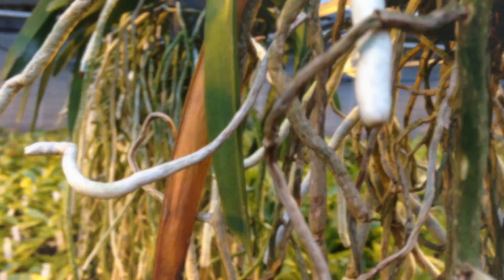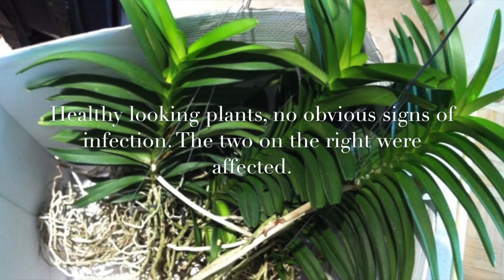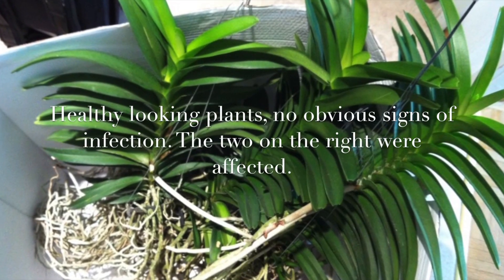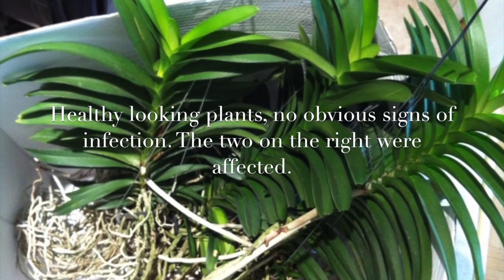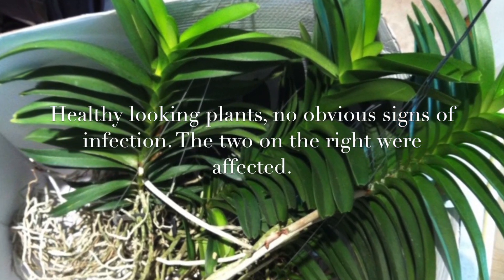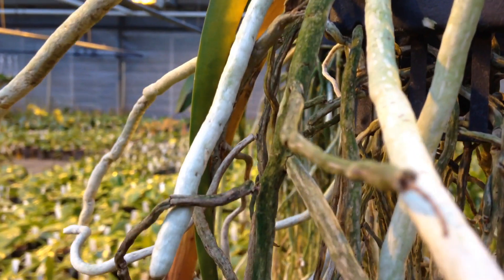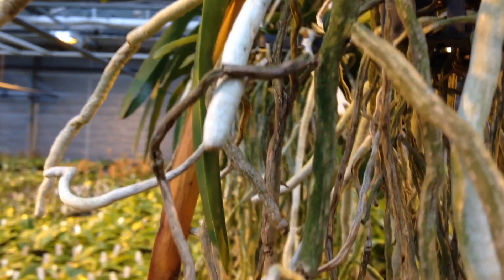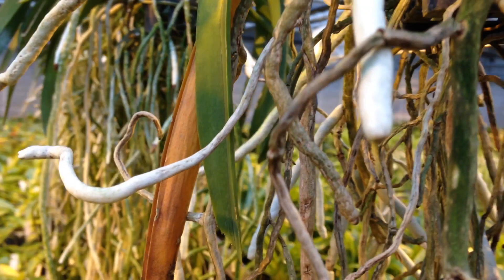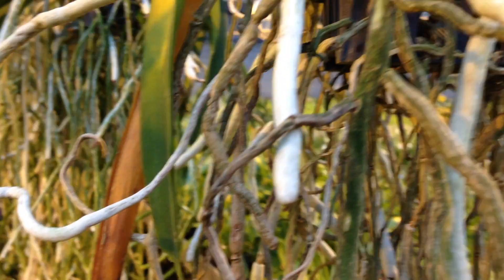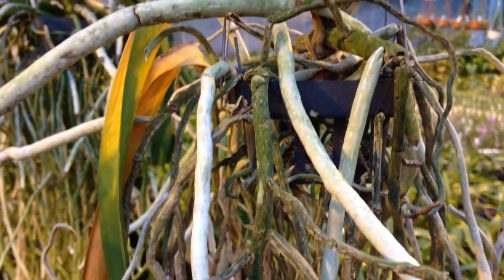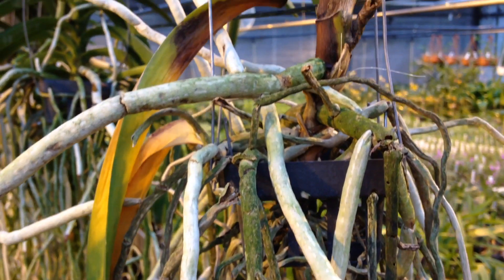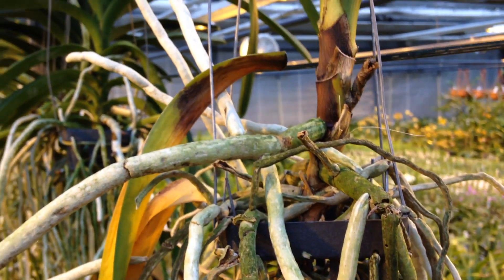About five years ago a vendor had just gotten a bunch of Vanda hybrids from Thailand and I bought four of them — huge plants, pretty cheap because he didn't have space for all of them. Shortly after, three got Fusarium: two recovered from it, one died. But what was left of the two Vandas that recovered eventually was only one half or one quarter or even less of the original plant.